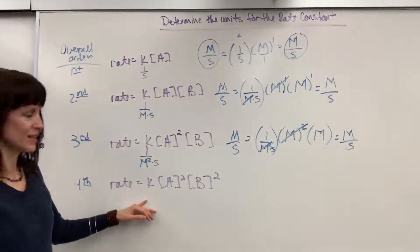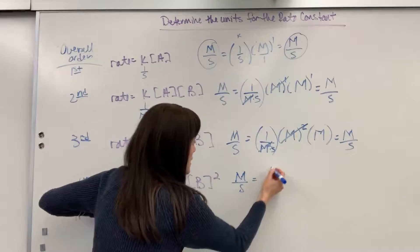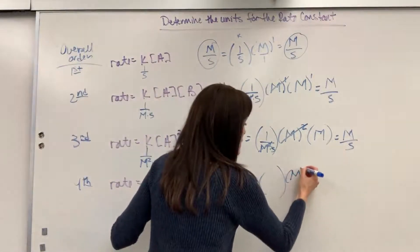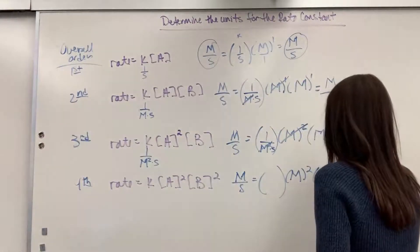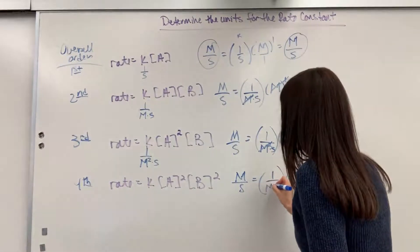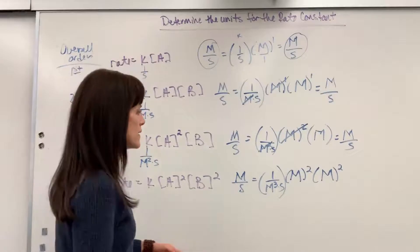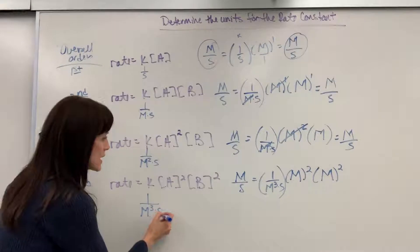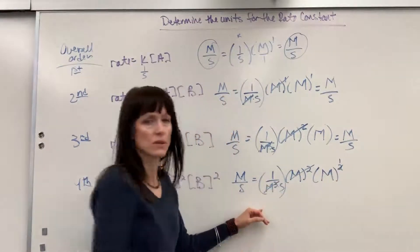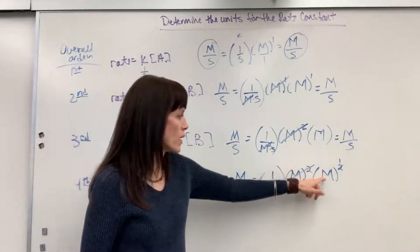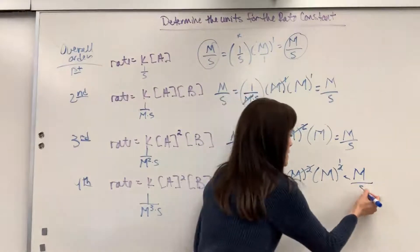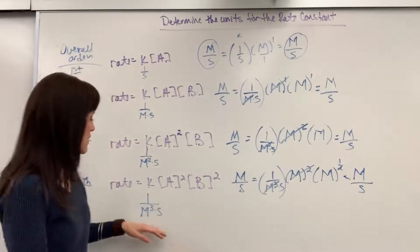For a fourth order reaction, rate is molarity per second. The concentration of A squared gives molarity squared, and B squared gives molarity squared — combined that's molarity to the fourth. I only need one molarity, so K's unit has molarity cubed in the denominator. Molarity squared plus one of the molarity cubed cancels three molarities, leaving one molarity, and second carries over. The unit for K is 1 over molarity cubed times second.